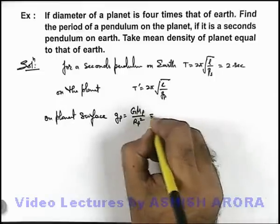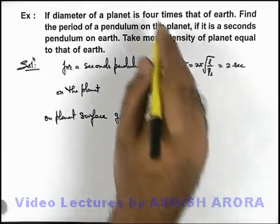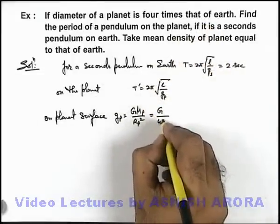And in this situation, we can substitute the value of radius of planet which is 4 times that of Earth's, so this will be 4Rₑ squared.